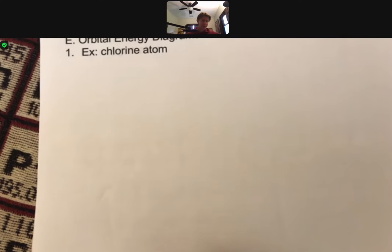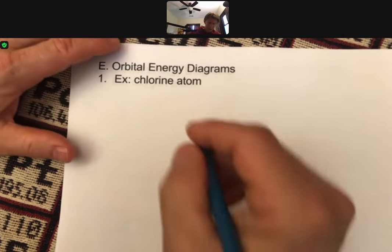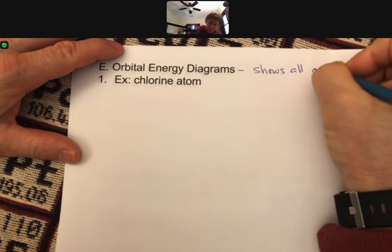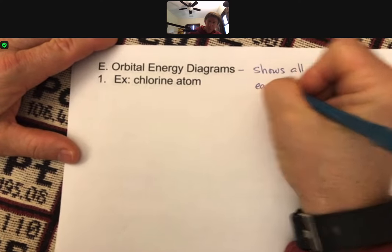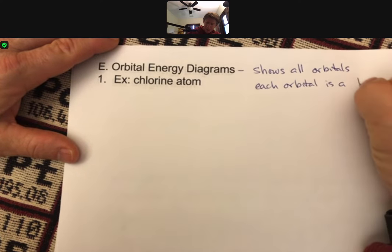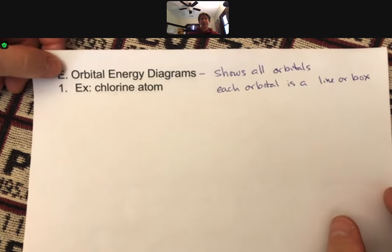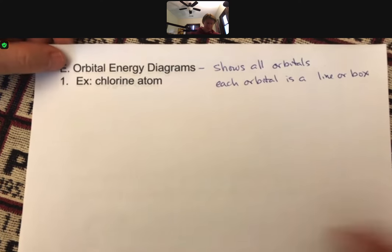Let me show you what I mean by that. So now we're going to do what's called an orbital energy diagram for the chlorine atom. And an orbital energy diagram shows all orbitals. And each orbital is a line or box. And it just depends what I can draw on the learning management system, which one I use. But typically I use boxes when I draw them by hand.